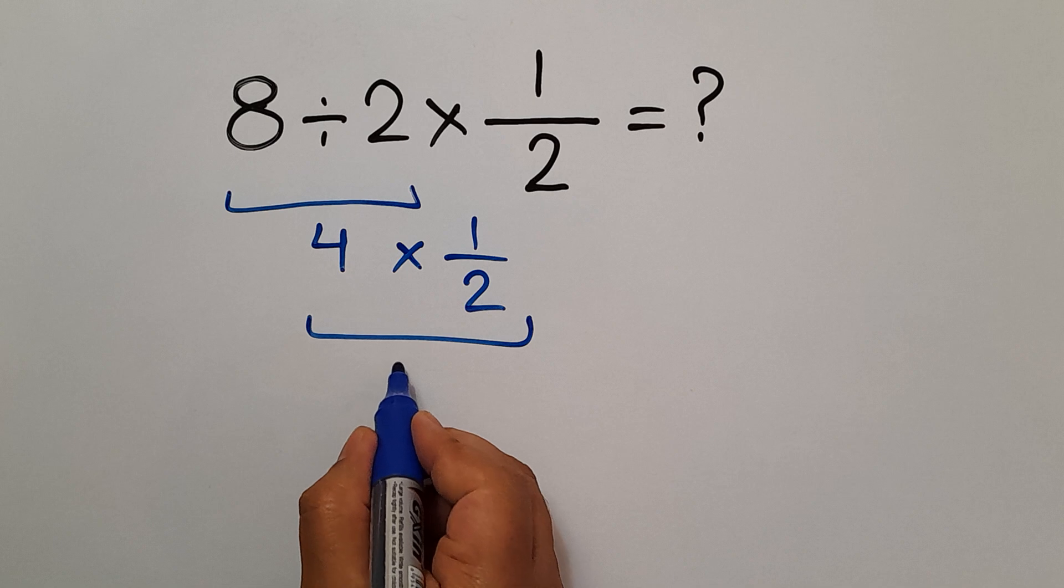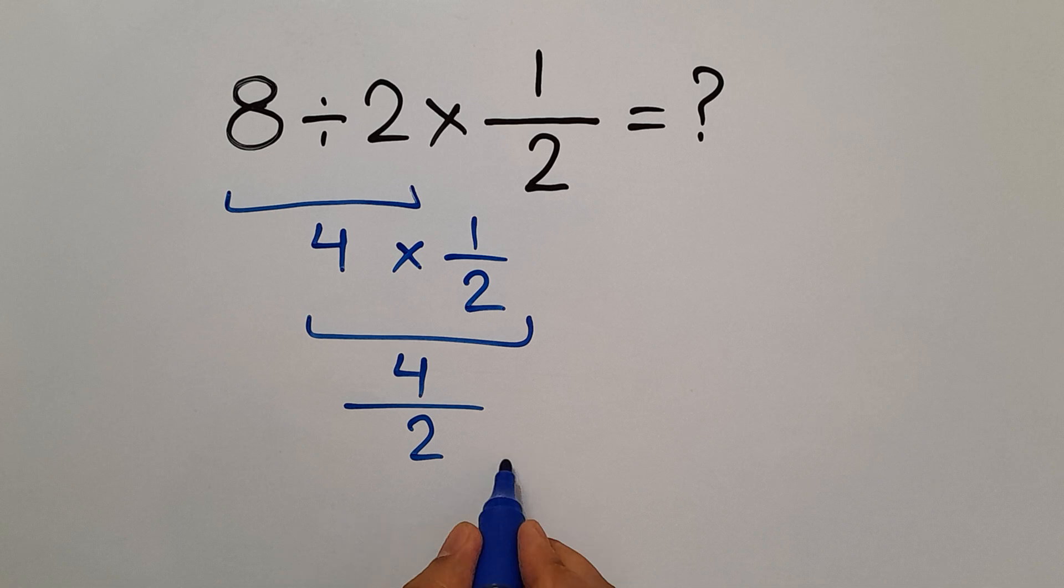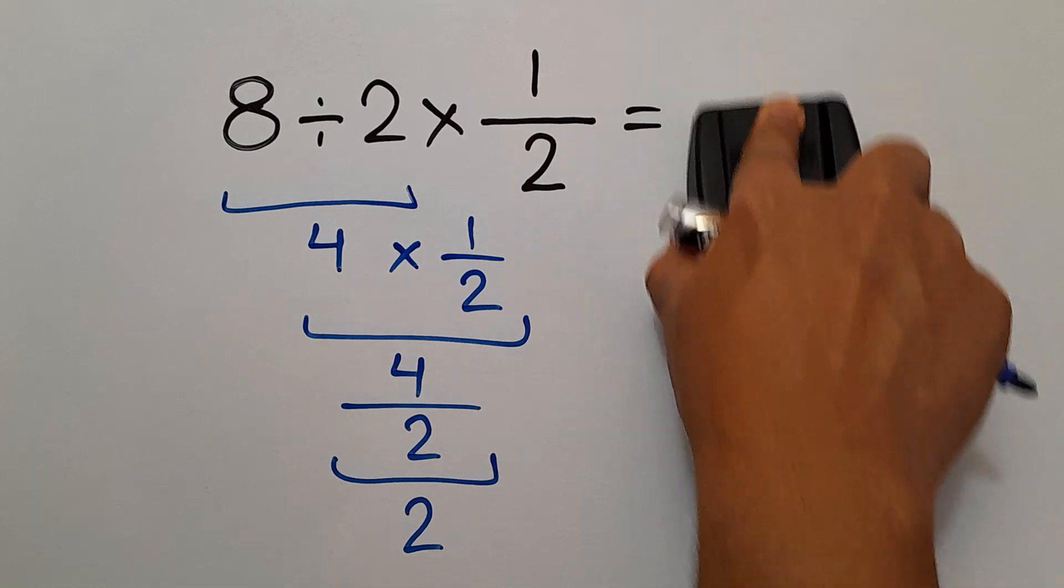4 times 1 over 2 can be written as 4 over 2, and 4 over 2 is equal to just 2. So our final answer to this problem is 2.